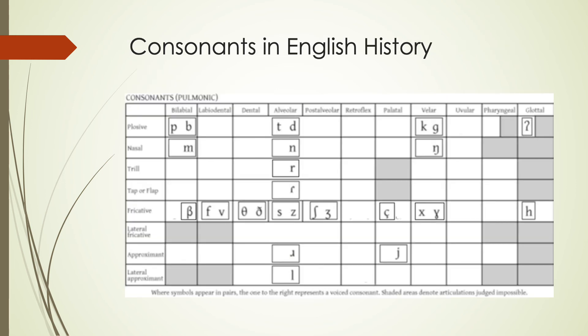The consonant chart on your handout shows all the different sounds we have or have had in English over time. Some, like the bilabial fricative or the velar fricatives, we don't have in modern English but used to have in previous forms. They're listed on your chart so that you're familiar with them as we see them in other areas of English history.